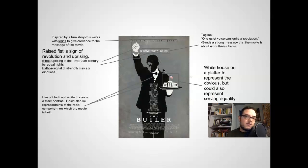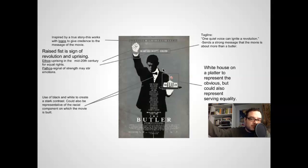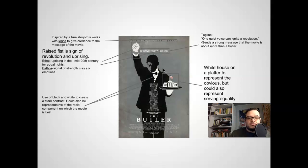'Inspired by a true story' is a logos appeal — it gives credibility, making it also an ethos appeal. The tagline 'One quiet voice can ignite a revolution' sends a strong message that the movie is about more than a butler. The raised fist is a sign of revolution and uprising associated with equal rights in the mid-20th century. We associate it with black power, though historically it's been linked to socialism and workers' revolutions going back to the 1890s. The open salute, by contrast, is generally associated with the Roman Empire and fascism — so we know this poster carries a vaguely left-wing message.